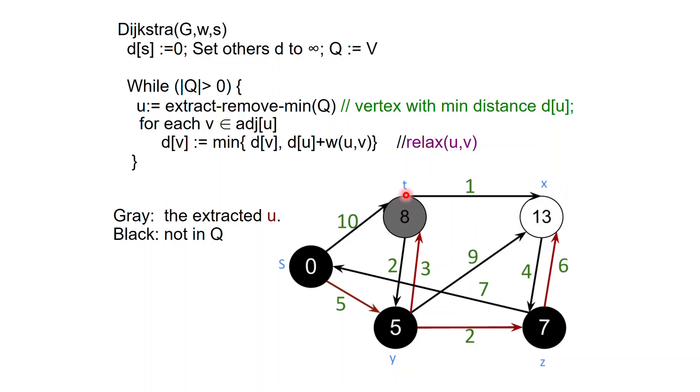Then the minimum will be node T. So we relax again, all its neighbors. That's going to modify the distance of X. Then we extract X and that doesn't do anything. And this is how the algorithm finishes.